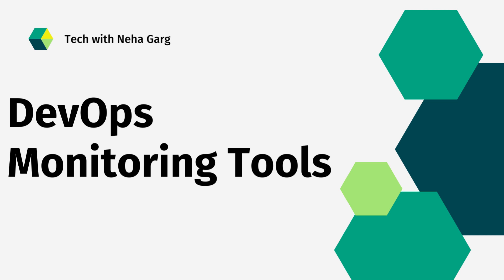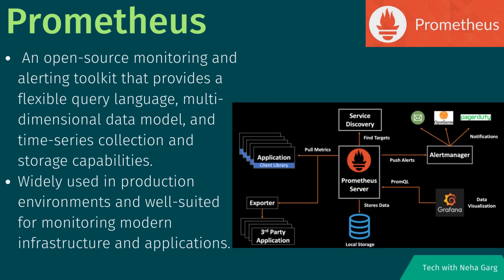The first tool we are going to discuss is Prometheus. It's an open source monitoring and alerting toolkit that provides a flexible query language, multi-dimensional data model, and time series collection and storage capabilities. It is widely used in production environments and is well suited for monitoring modern infrastructure and applications. Prometheus supports a range of exporters for collecting metrics from different sources and provides various integrations with other tools such as Grafana.